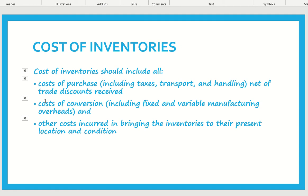Second, the cost of conversion including fixed or variable manufacturing costs or overheads are also included in the cost of inventory. Third, other costs incurred to bring the inventory to their present location — for example, transportation cost from the factory to the warehouse or warehouse to the shop for selling goods are also included in the cost of inventory.